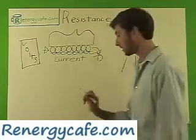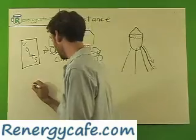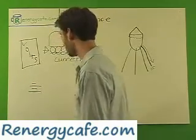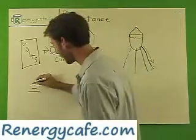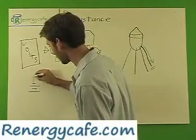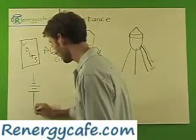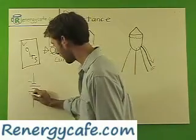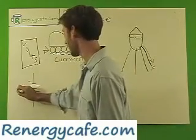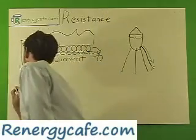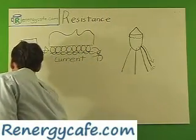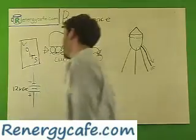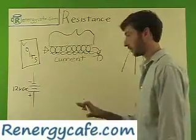The way you're generally going to see it, or the way you want to start thinking of it, is in the form of a schematic. Now this right here is a battery that I just drew — it's a schematic battery. The little side is negative and the big side is positive, and generally you're going to have a value over here, like 12 volts DC. For this particular example, it's not relevant.